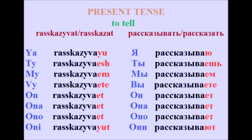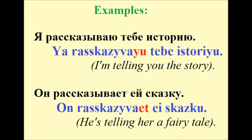Present tense of рассказывать: Я рассказываю, ты рассказываешь, мы рассказываем, вы рассказываете, он рассказывает, она рассказывает, оно рассказывает, они рассказывают. Examples: Я рассказываю тебе историю — I am telling you a story. Он рассказывает ей сказку — He is telling her a fairy tale.